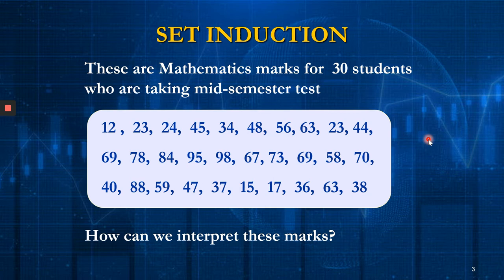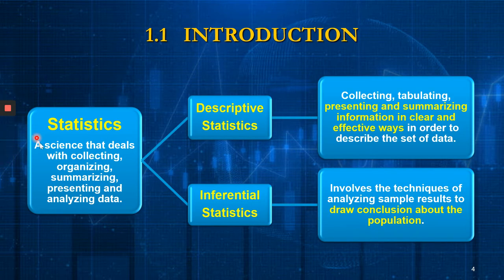What is statistics? Statistics is basically a science that involves collecting, organizing, summarizing, presenting, and analyzing data. We have two types of statistics: the first one is descriptive statistics and the second one is inferential statistics.